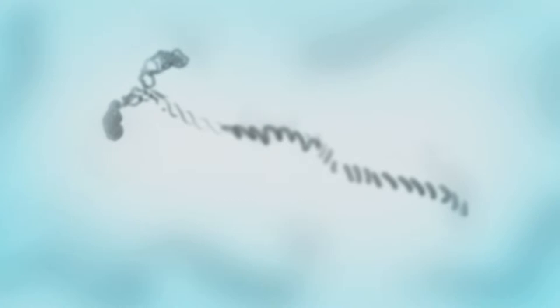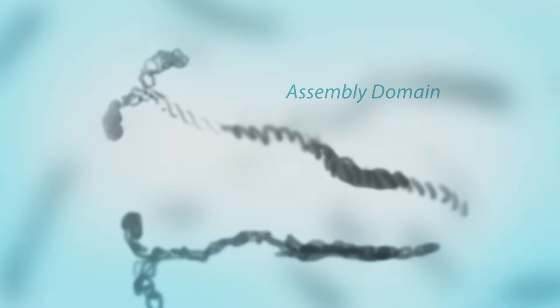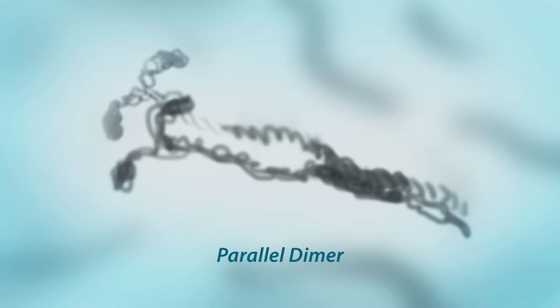The portion of the coiled-coil tail furthest from the motor acts as an assembly domain. Here, two myosin monomers can bind to each other, forming a parallel dimer. Dimers then join into an anti-parallel tetramer, a nucleus to which more and more dimers bind. The resulting assembly is a bipolar thick filament, or BTF — an active form of myosin-2 that can actually do work.